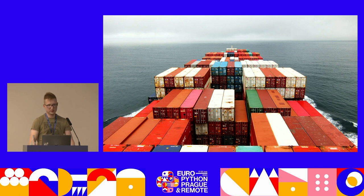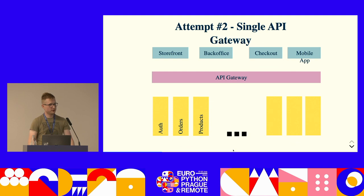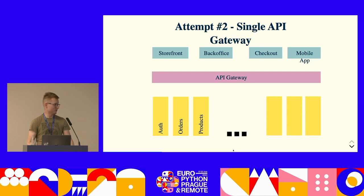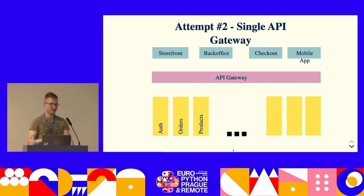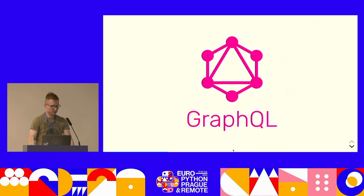Instead of having four new API gateways, we decided to have just one. That's a trade-off in API architecture — we introduced a single point of failure in our system. However, we decided this was a trade-off we could live with, because we have nice infrastructure that scales and deals with that kind of case. Within that approach, we would be able to connect all those front applications to the backend without letting them know how the data is organized under the hood. And here, GraphQL comes quite handy.